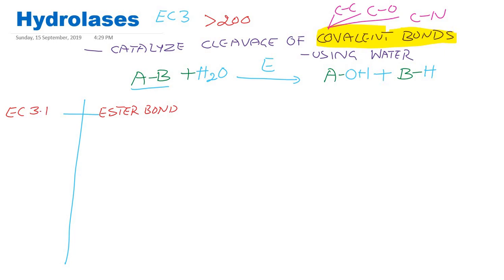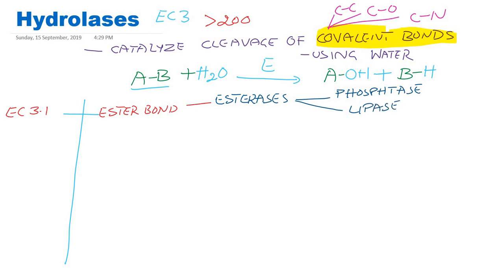Those Hydrolases which break ester bond are commonly known as Esterases. Examples of Esterases include Phosphatases, Lipases — the enzyme responsible for digestion of triglycerides — and also lipoprotein lipase, with different isoenzymes of lipases. Nucleases, that is nucleic acid enzymes, are also esterases, and also Phosphodiesterases. All these are Hydrolases targeting ester bonds, belonging to enzyme commission number 3-1 series.